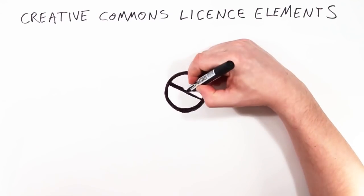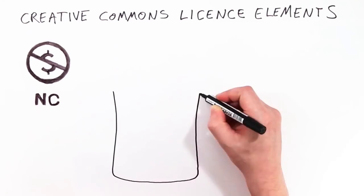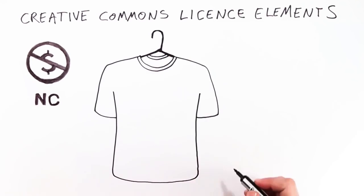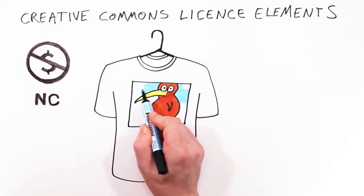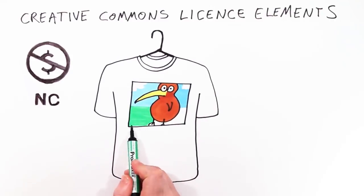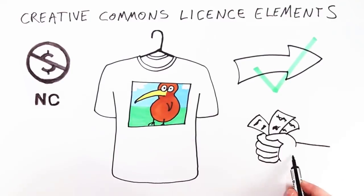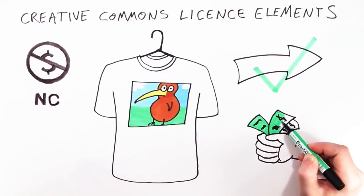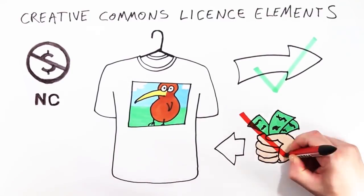This is Non-Commercial. It means no one else but Kiri is permitted to make money from CC Kiwi. Tim wants to print the photo onto t-shirts and distribute them to friends. He can do this, but he must not sell them.